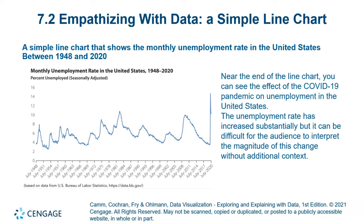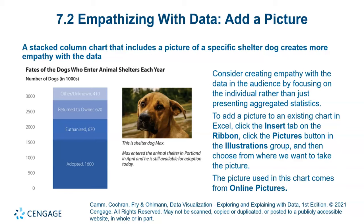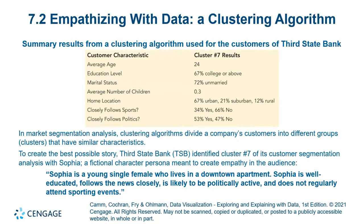To empathize with a line chart, we associate contextual values — for example, near the end of the line chart we can see the effect of the COVID-19 pandemic on unemployment in the United States. Additionally, a dot matrix chart is available in Excel and can also be created manually. In this chart, the shaded area represents the total labor force in the state of Ohio while the non-shaded area represents the rest. Adding pictures alongside numbers helps highlight and strengthen the visualization.